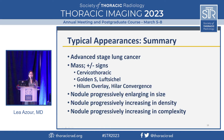Summary of part one: typical appearances. Unfortunately, advanced stages — mass, plus or minus the classic centennial signs of the golden S, cervicothoracic, and hilum overlay signs. And then nodules that are progressively enlarging in size, density, or complexity.